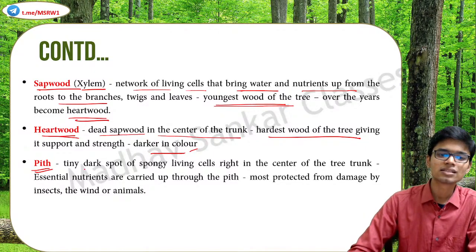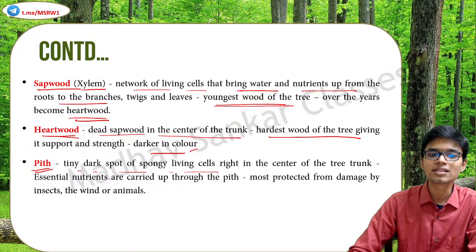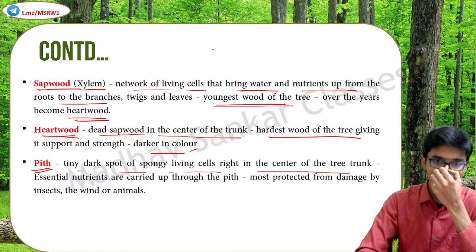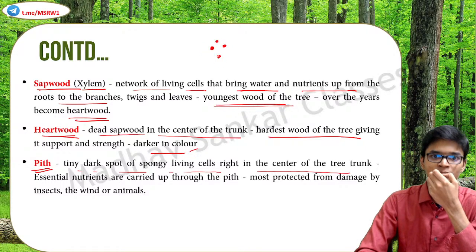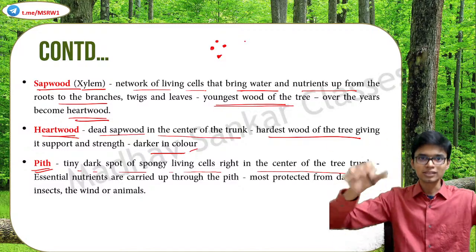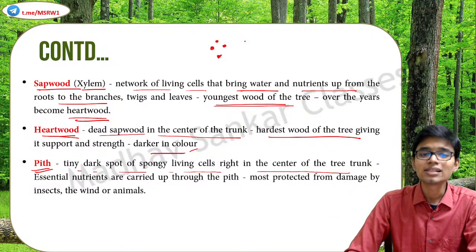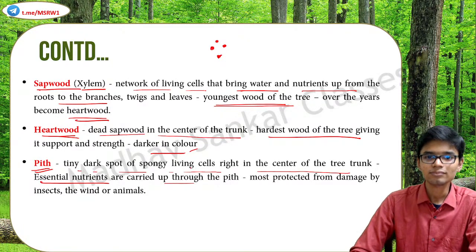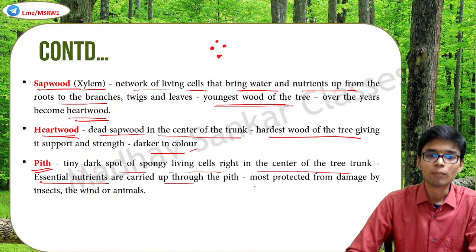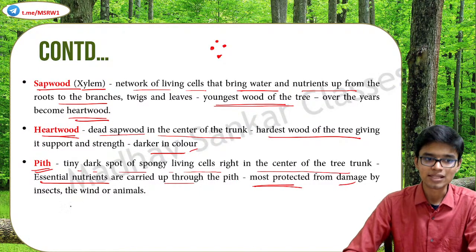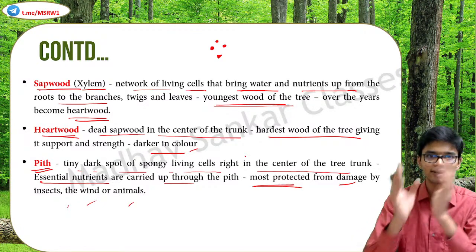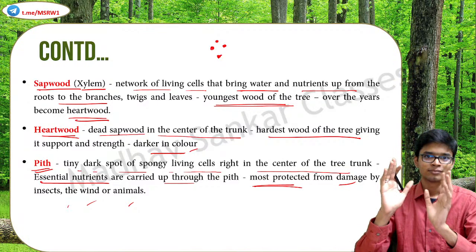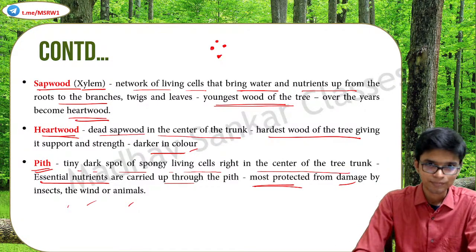Pith is the tiny dark spot of spongy living cells right at the center of the tree trunk. These are very important in carrying essential nutrients to different parts of the tree. Because these are so vital for the life of a tree, they are the most protected from damage by insects, wind, and animals - that is why they are right at the center of the trunk, not in the periphery. These are one of the most protected parts of a tree.